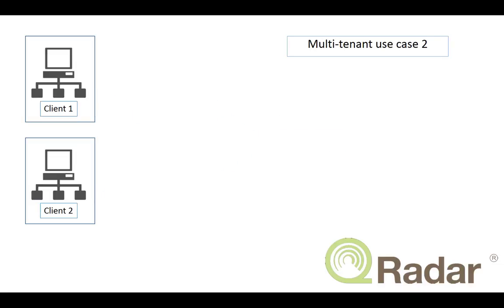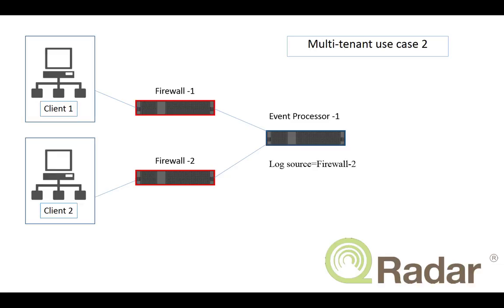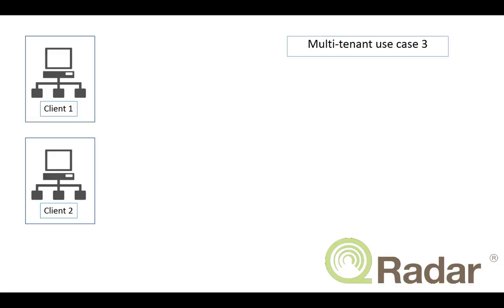But things often get a little more complicated than that. What if these clients are coming in across different firewalls? In this case, firewall 1 and firewall 2 — any brand, any variety you like. The event processor is smart enough to see that the log source equals firewall number 2, so it knows this data belongs to client number 2.